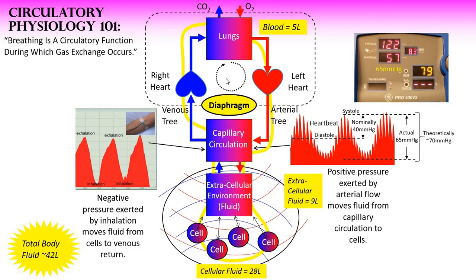When breathing is slow, deep, and rhythmic, it generates a wave in the circulation as viewed at the capillary circulation. This was taken at the earlobe, but we can see it in the fingertips — anywhere we attach a plethysmograph to the capillary circulation of the body. It is also visible in the brain when viewed with hemoencephalography.